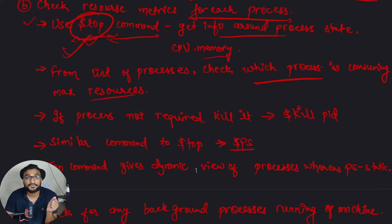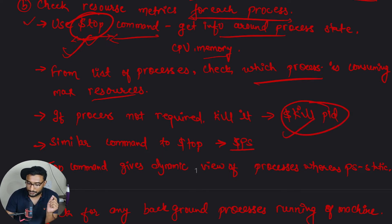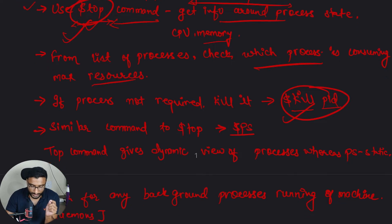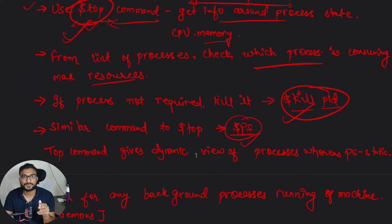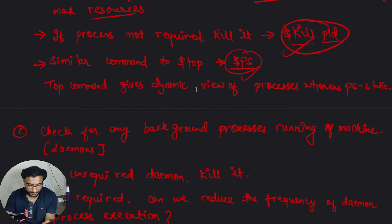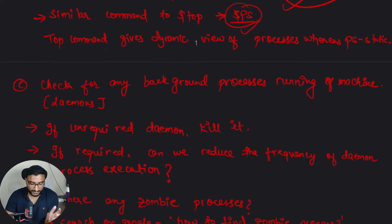If you find a process that is not required by the system but is consuming a lot of resources, you can kill it using the command `kill <pid>`, where the PID comes from the `top` command output. There is also a similar command, `ps`, which gives a static view of process information, whereas `top` gives a dynamic, continuously updating view.